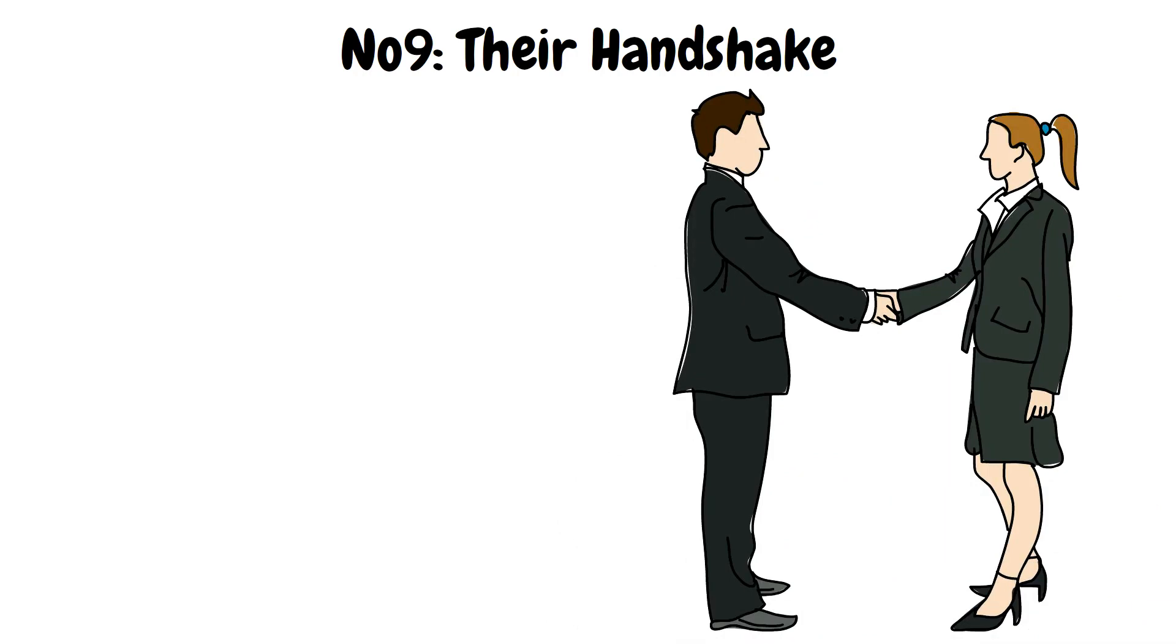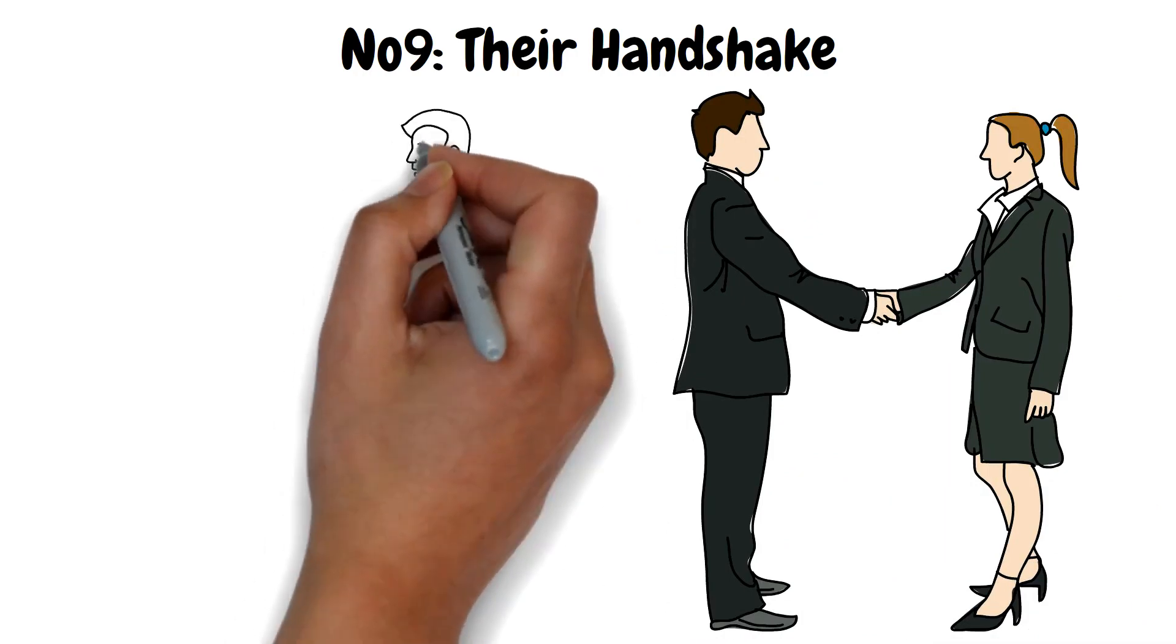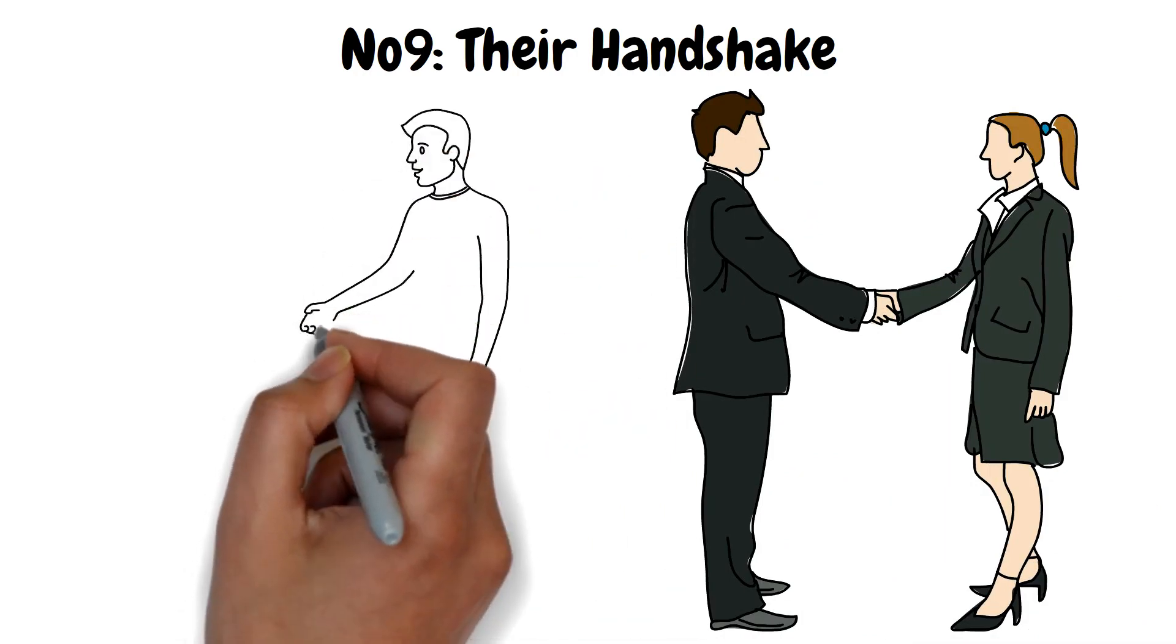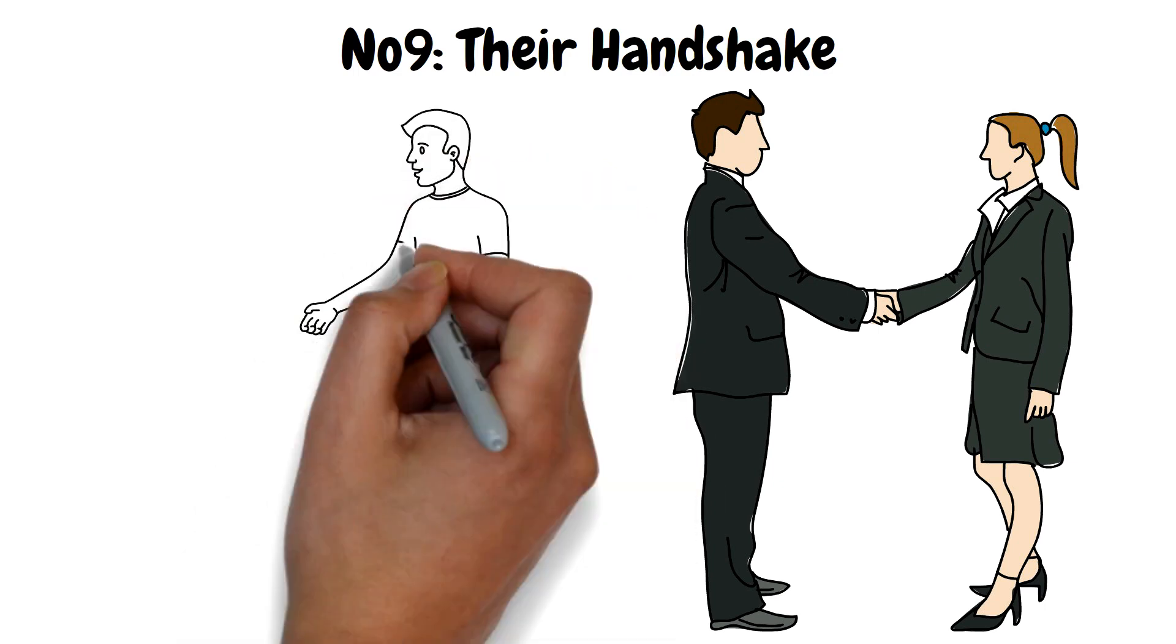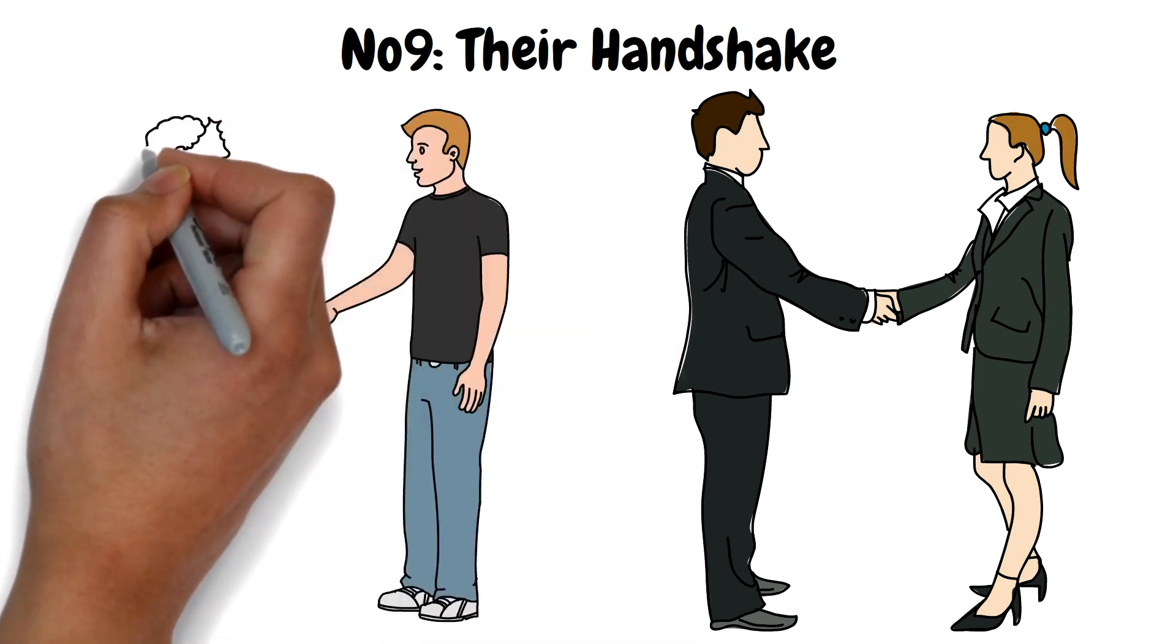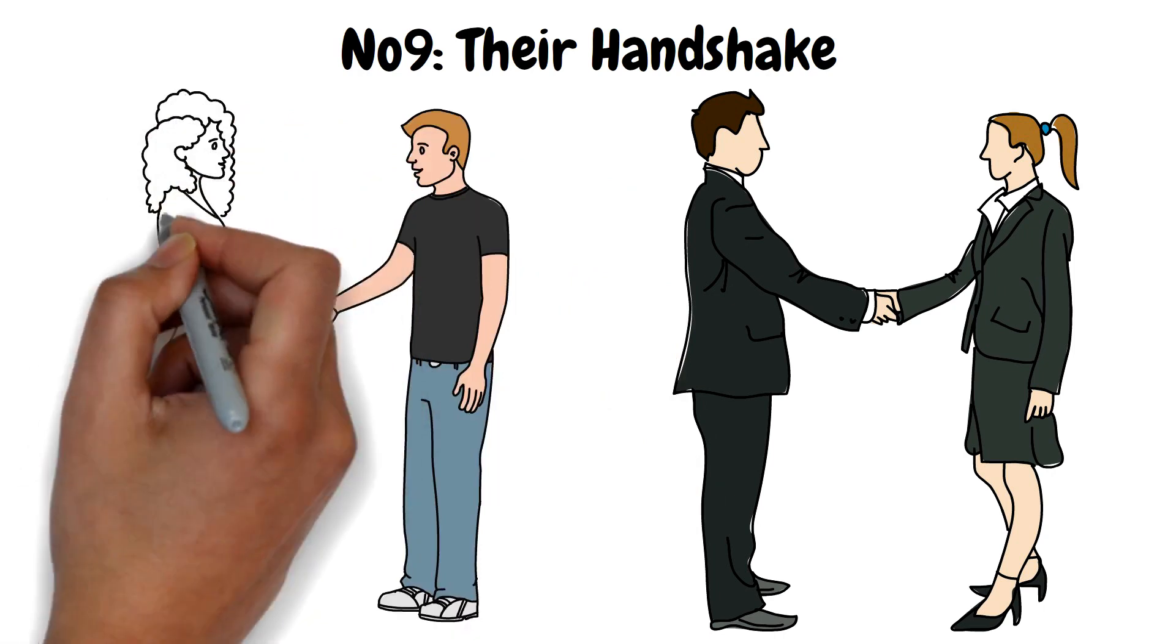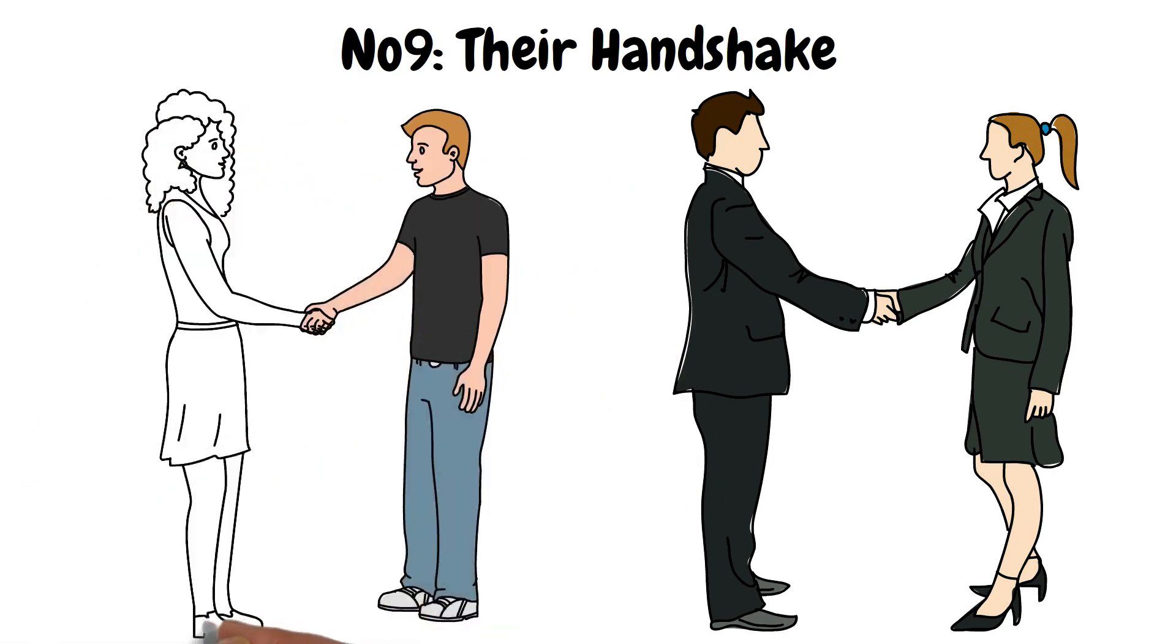If someone flips their hand on top of yours, they show dominance and maybe even aggression or hostility. They want to show you that they are in control. If you shake hands with someone who has their palm up, that means that the person is submissive and not very confident.